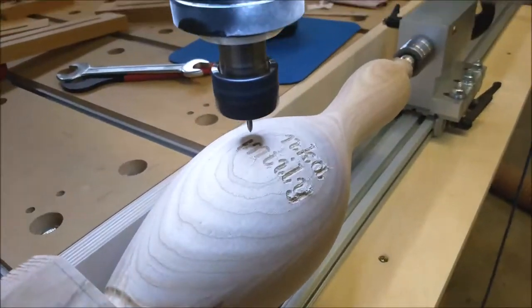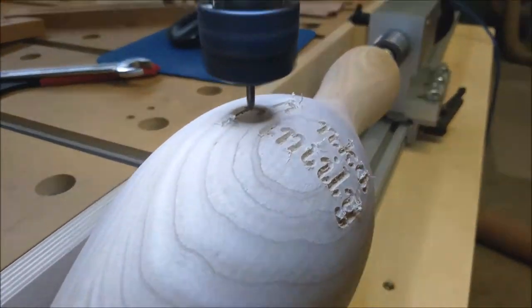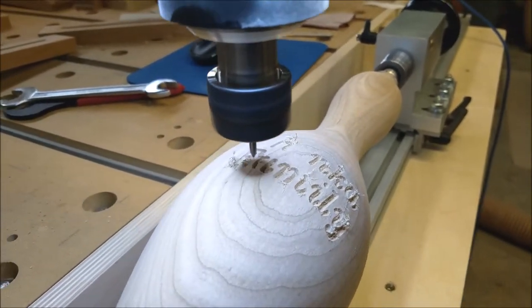For the top two lines of the lettering, the toolpath is programmed to cut 0.07 inches below the surface of the project.